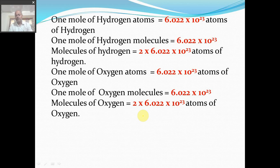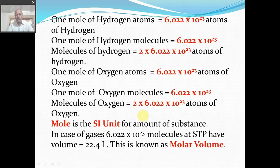So Avogadro number of atoms gives you one mole of oxygen atoms, and if you take Avogadro number of molecules, naturally there will be double — 2 × Avogadro number of atoms of oxygen. Mole is the SI unit for amount of substance. When we discussed units, I told you that mole is the SI unit for measuring amount of substance.